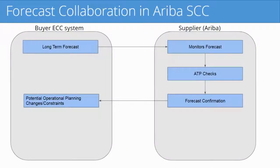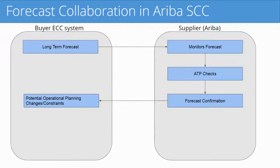The process starts from the buyer side — this could be an ECC system, IBP, or any planning system on your back-end used to generate forecasts. You'd send that long-term forecast to the supplier, and they're going to monitor that forecast. They can download it to their back-end system using one of the integration techniques, or as I'll show you here, how to download a CSV file.